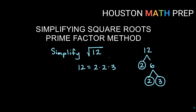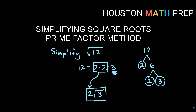When doing this with square roots, we look for any pair of prime factors. A pair can be pulled outside as a single copy of that number. Since I have a pair of 2s in my factors of 12, I pull out a single 2. Anything not part of a pair stays inside the root. So my reduced version of square root 12 is 2 times square root 3.